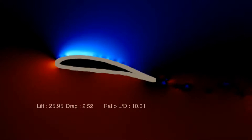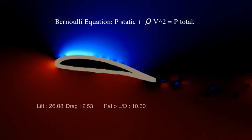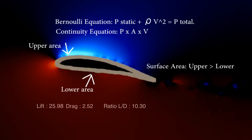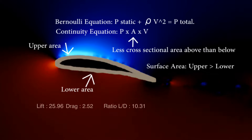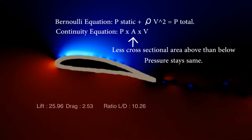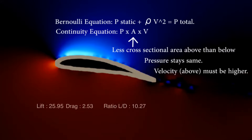The other, by Bernoulli, gives an equation: static pressure plus air density times velocity squared equals total pressure. This is known as Bernoulli's equation, used alongside the continuity equation, which is pressure times cross-sectional area of flow times velocity. In an aerofoil design, the upper surface area is larger than the lower, and this leads to a lower cross-sectional area of flow above the wing. Pressure in this case is the initial air pressure before reaching the aerofoil, so it's the same for both above and below.